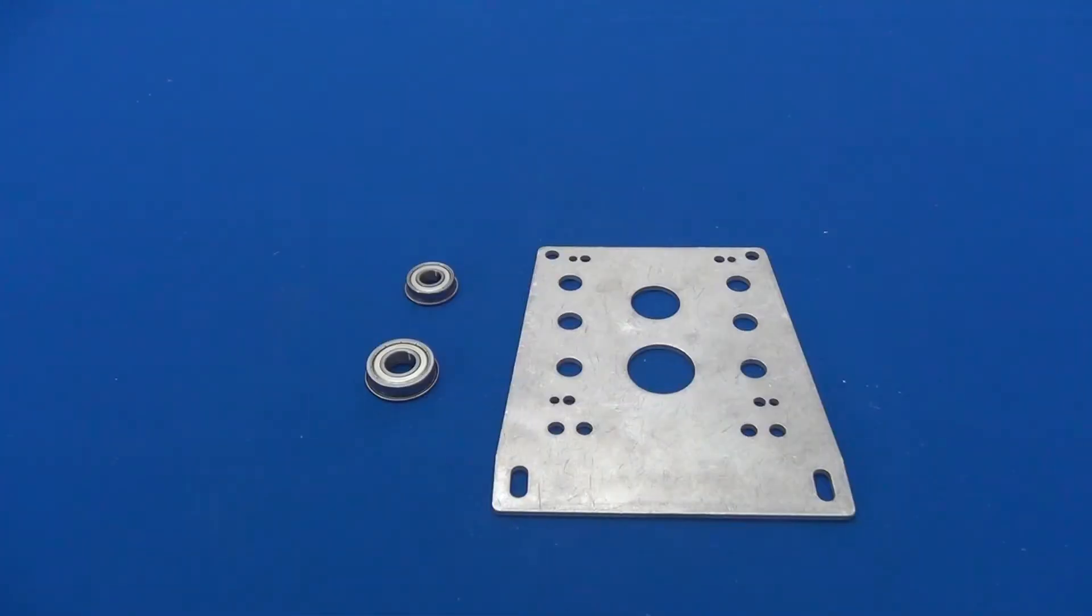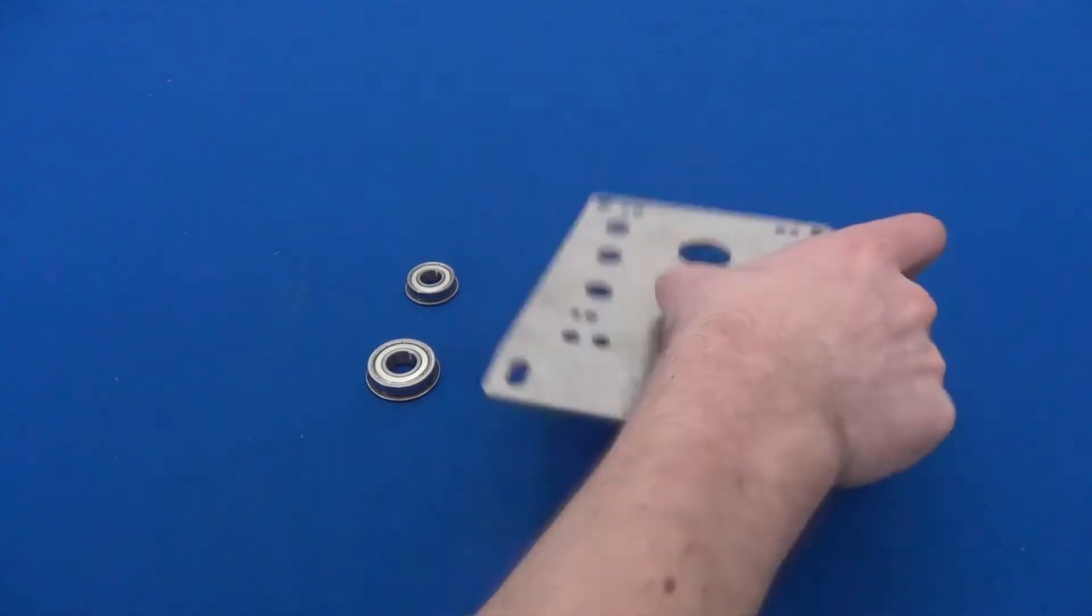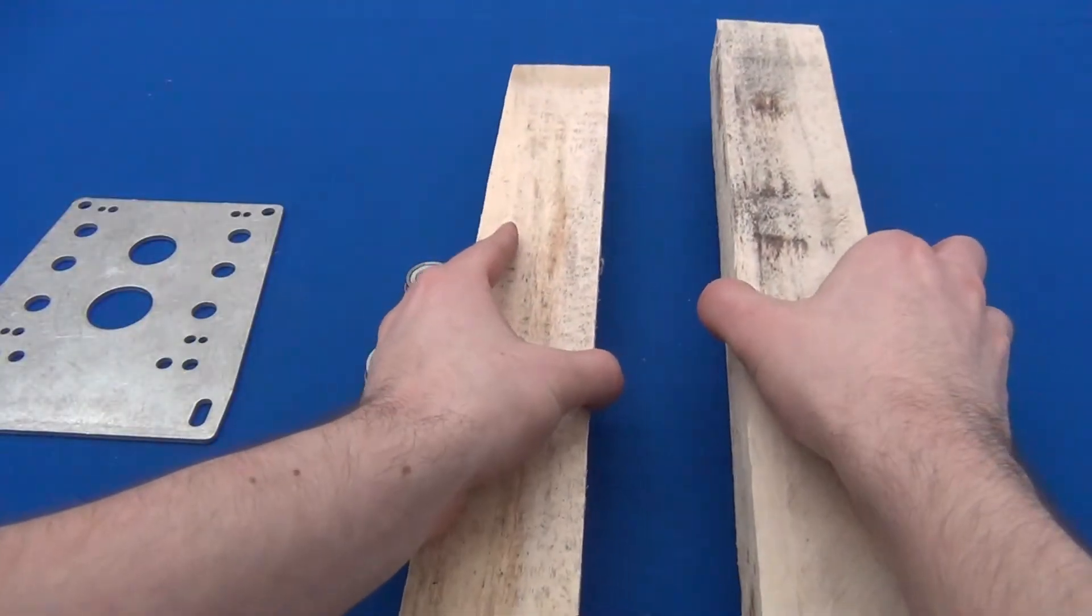Remember those flanged bearings from before? Grab those two flanged bearings and the Toughbox Mini shaft plate. We're going to press these bearings into the large holes of the shaft plate.